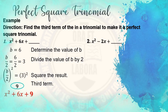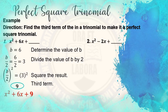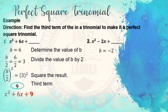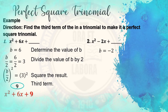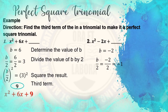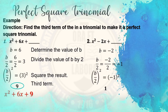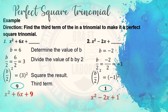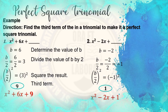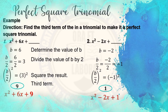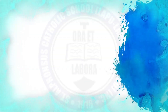Example number 2: x squared minus 2x plus blank. Step 1: determine the value of b — our b here is negative 2. Next, divide the value of b by 2 — negative 2 divided by 2 is negative 1. Next, square the result — negative 1 squared equals 1. So 1 would be our third term, and the perfect square trinomial will be x squared minus 2x plus 1.